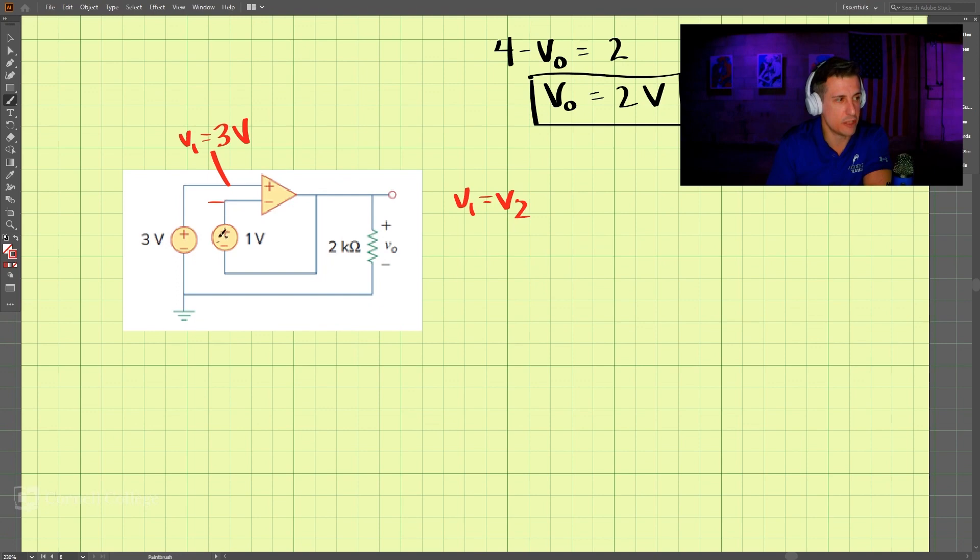Since we know that v1 is equal to v2, this must also be three volts. So three volts right here. If that is three volts, then we know that this here is three minus one, which is two volts. Which means over here is two volts.